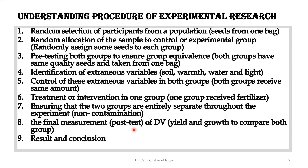Step eight is the final measurement, which is called the post-test. The post-test is basically a measurement of the dependent variable. After introducing the independent variable — the treatment or intervention, such as the fertilizer — we measure what effect it had on the dependent variable, such as the yield or growth of the seeds. Without a post-test, you cannot determine the result of introducing the independent variable.